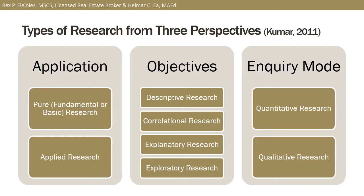As to objectives: descriptive defines or describes certain situation, phenomenon, variables, or the like. Correlational identifies the association or relationship between or among situations, variables, and the like. Explanatory clarifies the why and how of certain relationships or establishes cause and effect relationships that allow generalizations. While exploratory explores or investigates certain areas or subjects that are not yet well known — examples include feasibility and pilot studies.